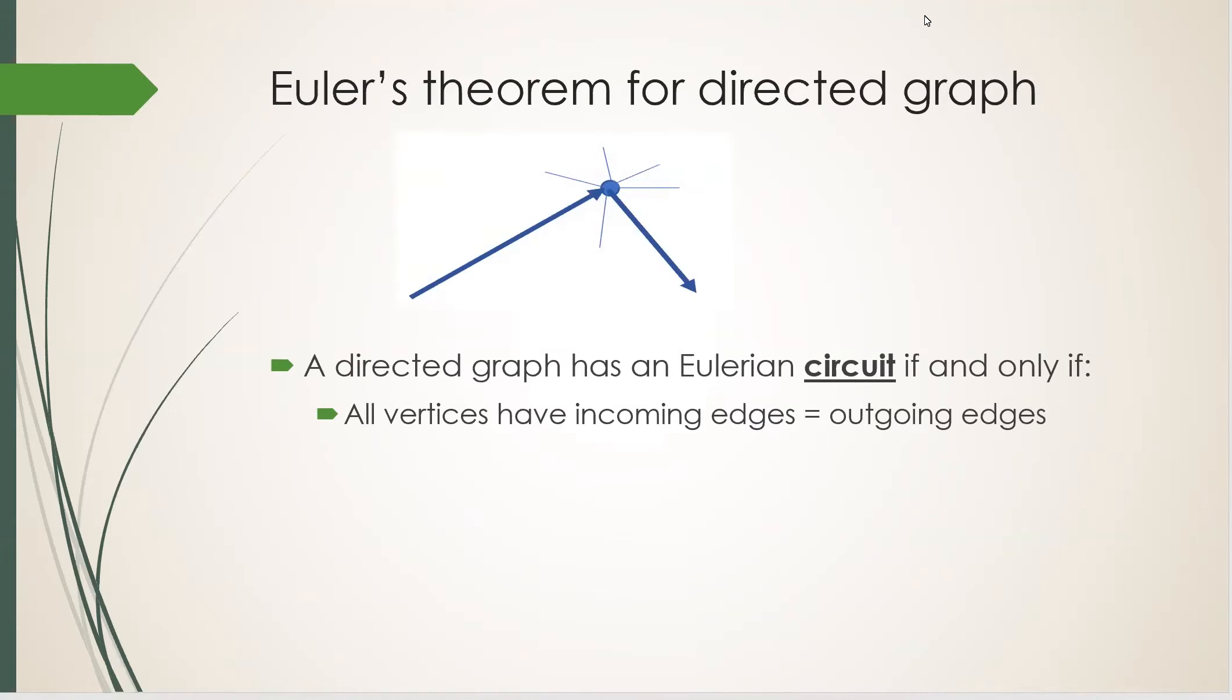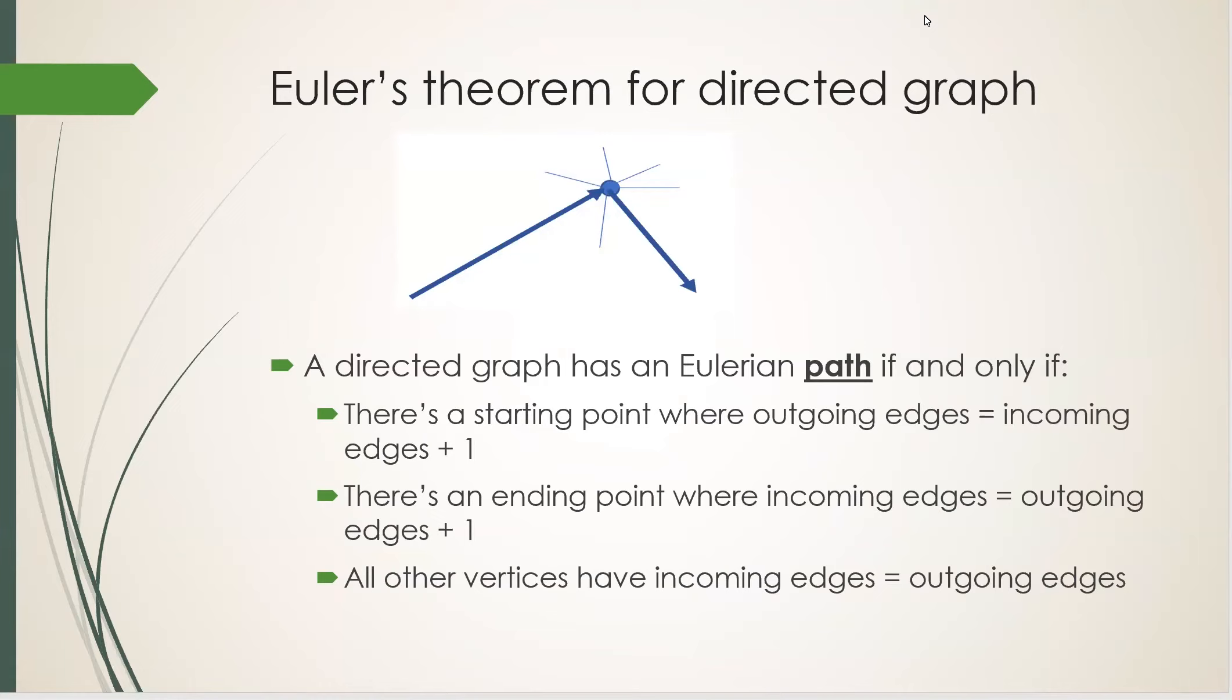Euler's theorem can be adjusted for directed graph using the same logic we had before. So a directed graph has an Eulerian circuit if and only if, for each vertex, the number of incoming edges equals the number of outgoing edges. A directed graph has an Eulerian path if and only if, for each vertex, the number of incoming edges equals the number of outgoing edges, except that there's a starting point where the number of outgoing edges is one more than the number of incoming edges, and there's an ending point where the number of incoming edges is one more than the number of outgoing edges.